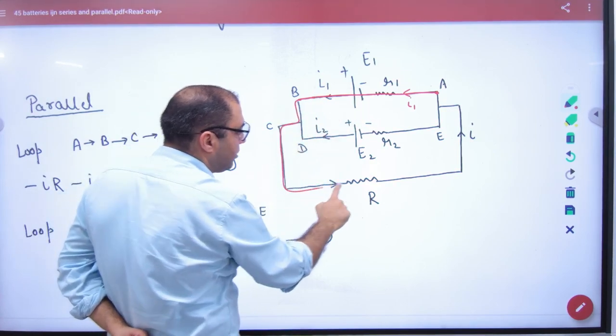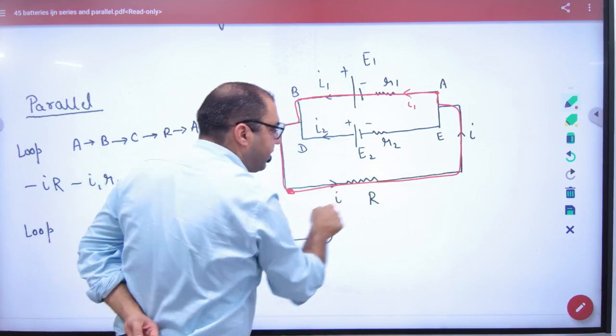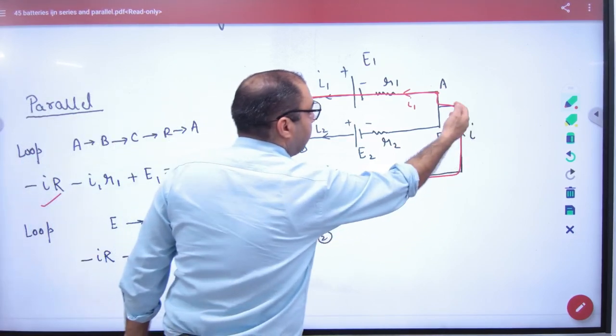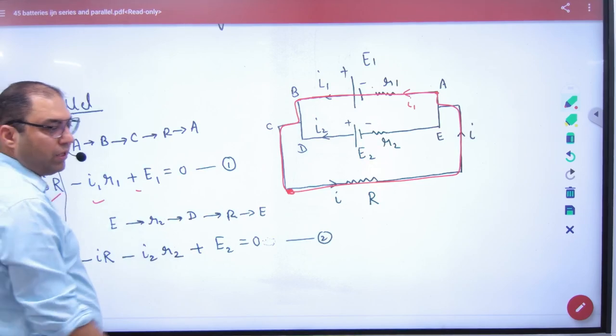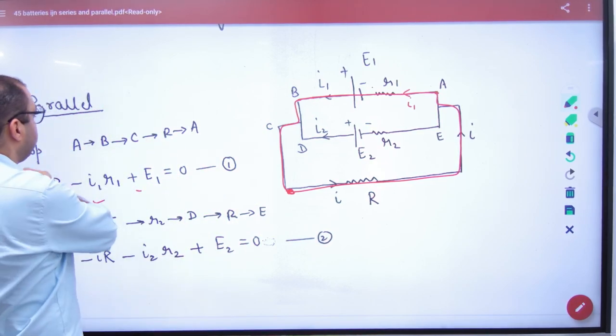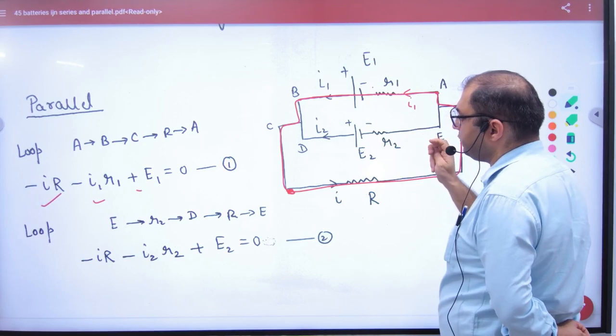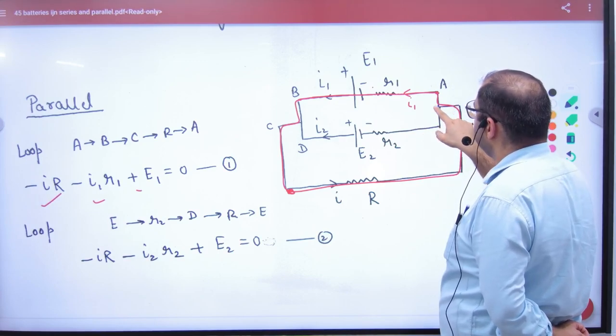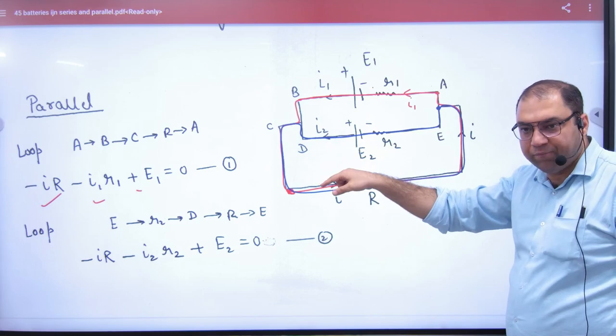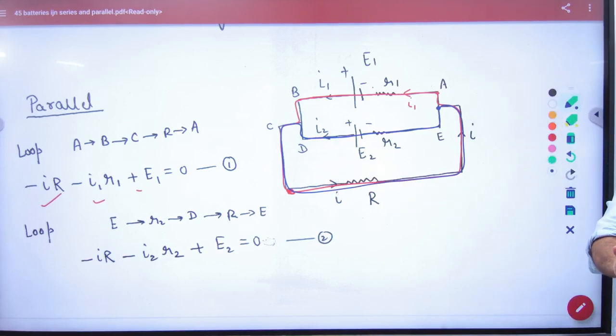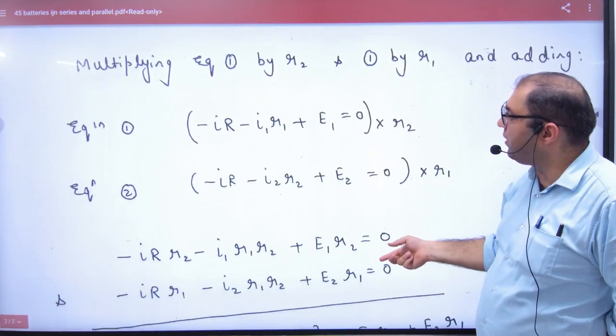I want to put this path, Kirchhoff's law. We start here, then minus IR, then minus I1R1, then plus E1 equal to zero. First equation. Then I want to choose this second path to E and take this path. I will put Kirchhoff's law on loop one and two, then I have these equations here.